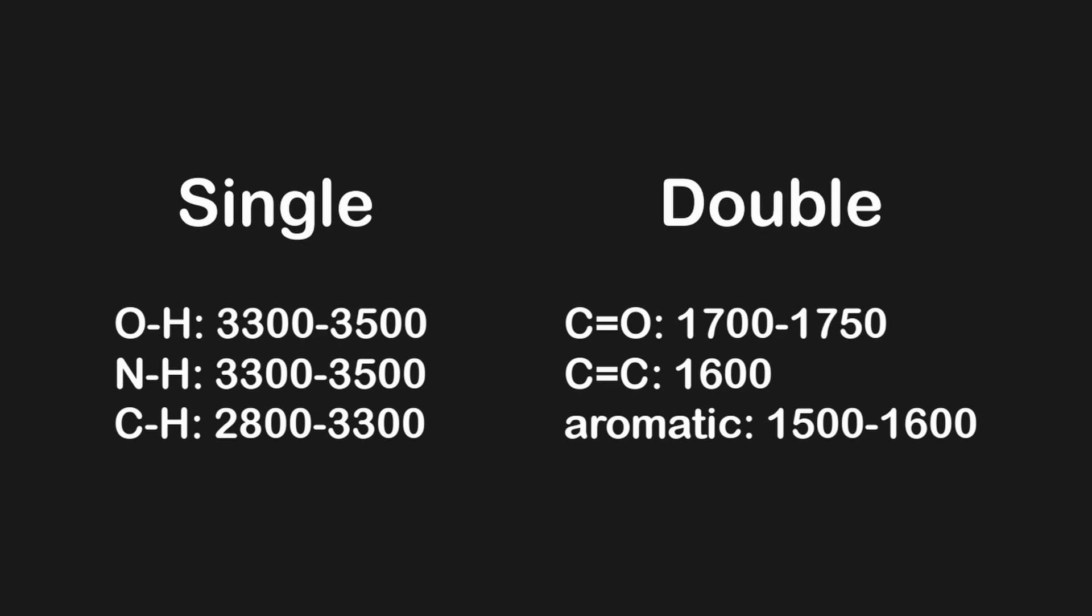These include stretches within both the single bond and the double bond region. For the single bond region, you're going to want to know a C-H bond, which will be found anywhere from 2800 to 3300, as well as O-H and N-H bonds, which range from around 3300 to 3500.